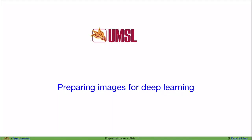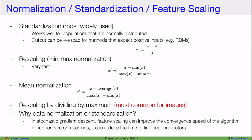In this module we'll talk about preparing images for deep learning. For any kind of machine learning and deep learning involving neural networks, it is important that we normalize the input data before we feed it to a neural network model. This is also known as standardization, although standardization refers to something more specific within the topic of normalization, but they are used interchangeably. This is also known as feature scaling.